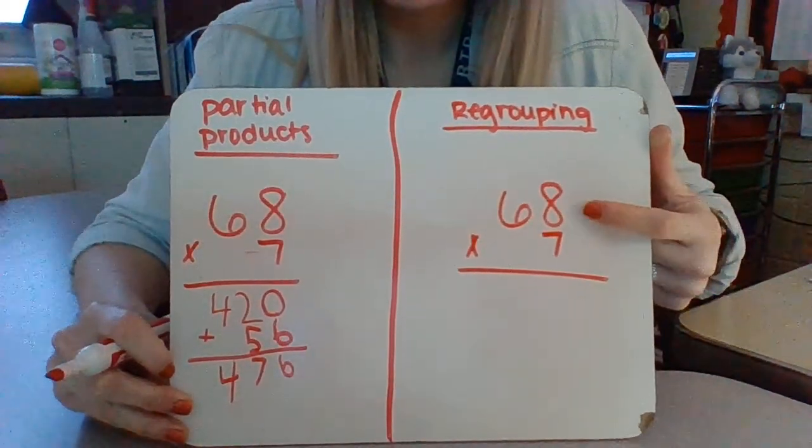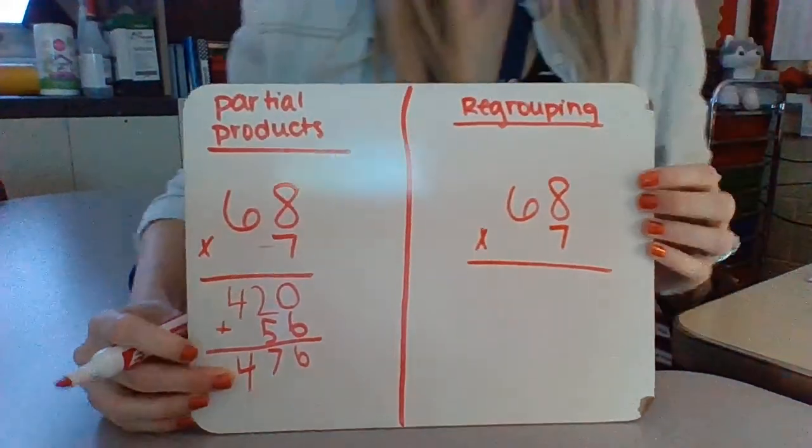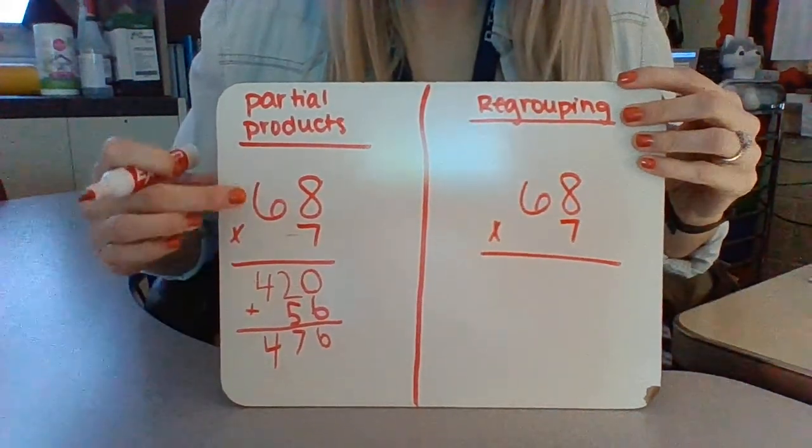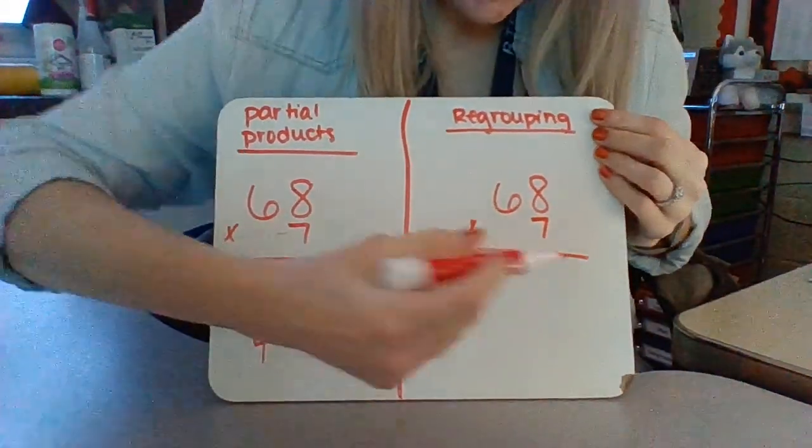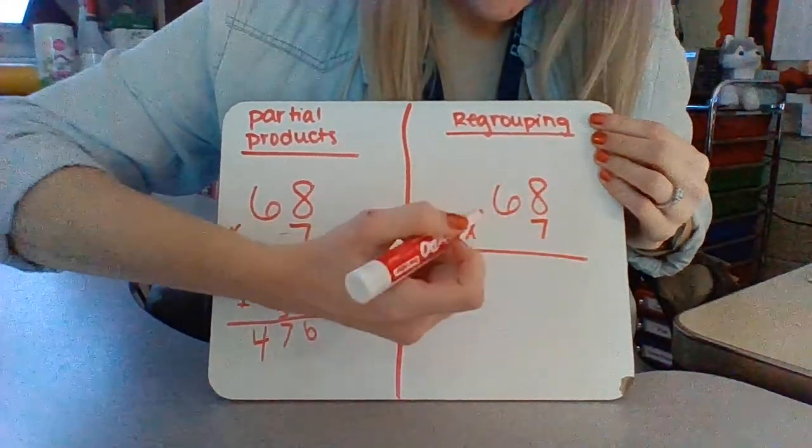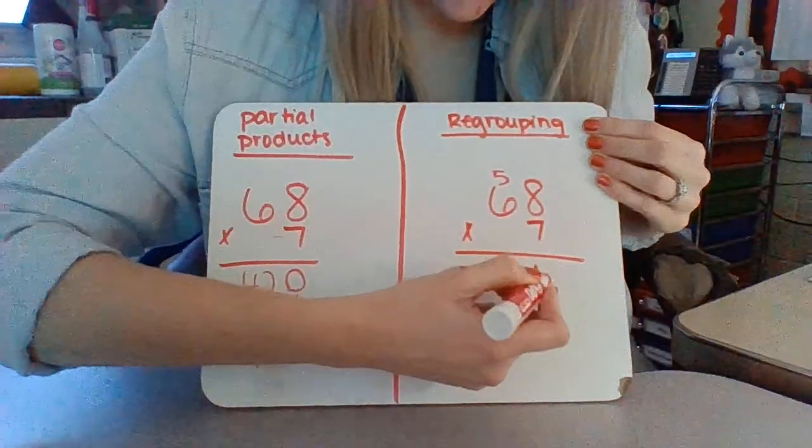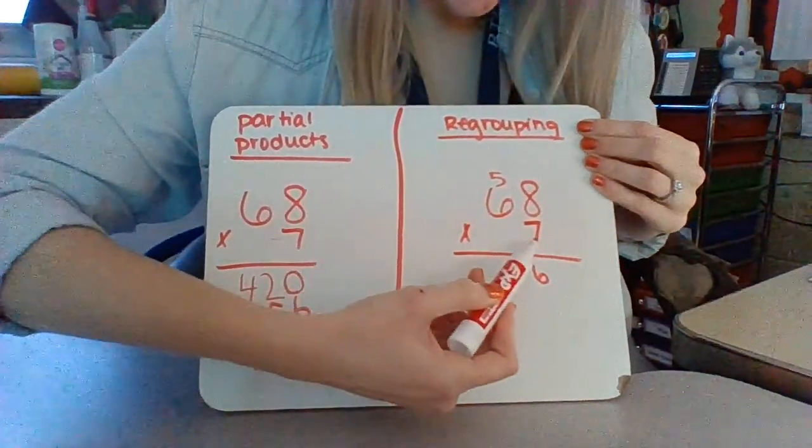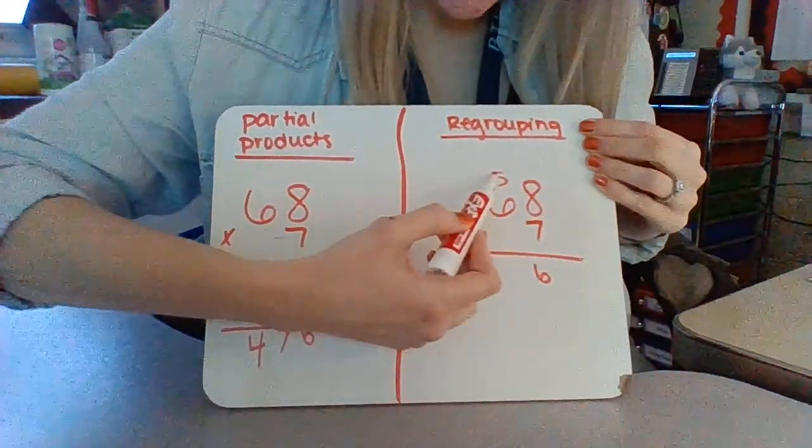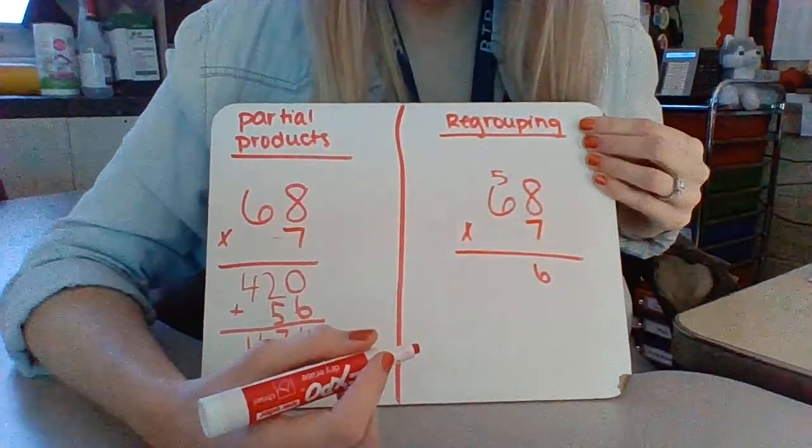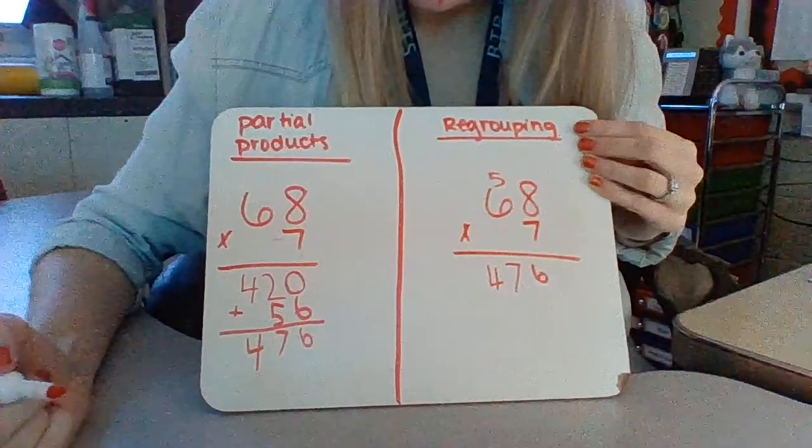So when we multiply using regrouping, we should get 476 as our answer. With partial products we started on this side; with regrouping we're going to start in the ones place. So 7 times 8 is 56. My 5 goes up, my 6 goes down. Now I take 7 times 6, which is 42, plus 5. So 42 plus 5 is 47, and that's our answer.